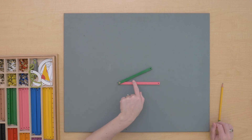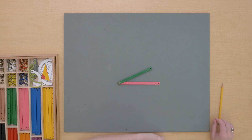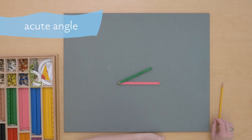This type of angle right here that's smaller than a right angle is called an acute angle.